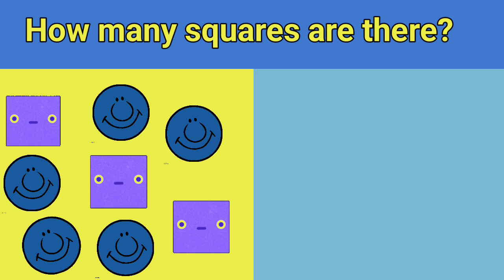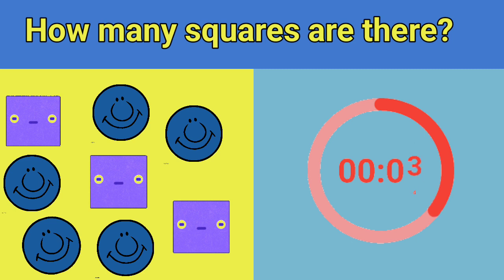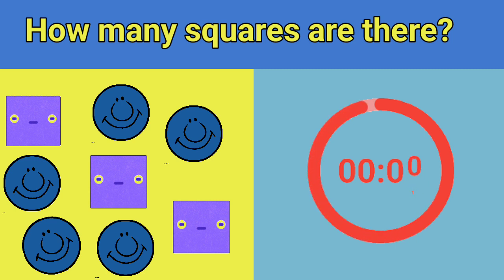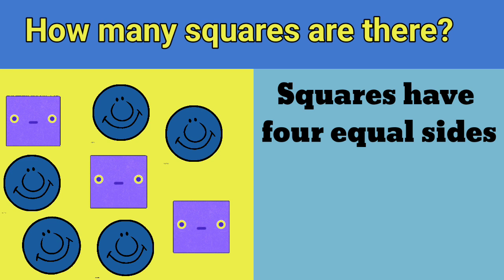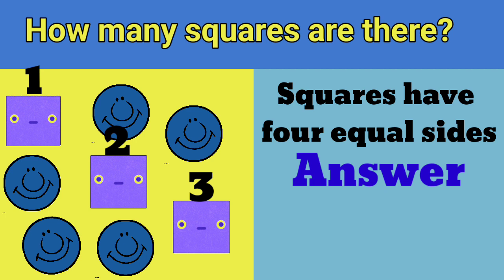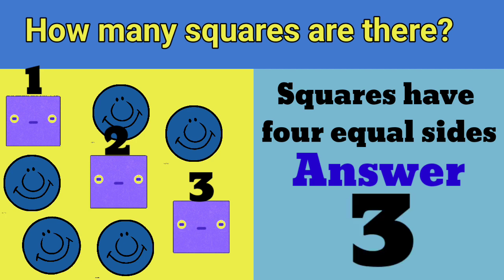How many squares are there? Squares have four equal sides. Let's count: 1, 2, 3. There are three squares.